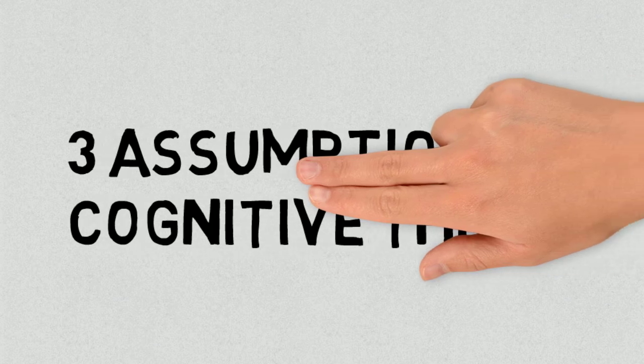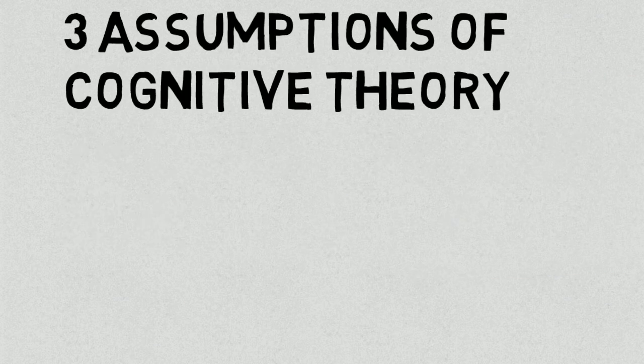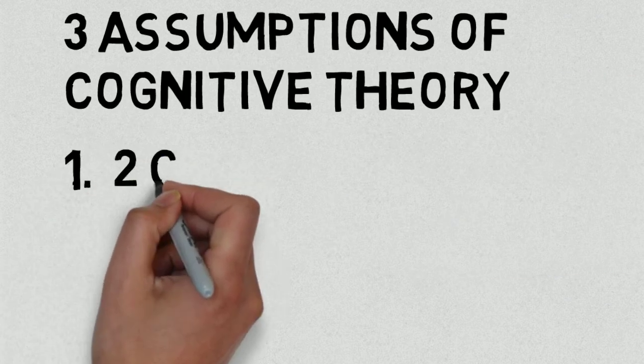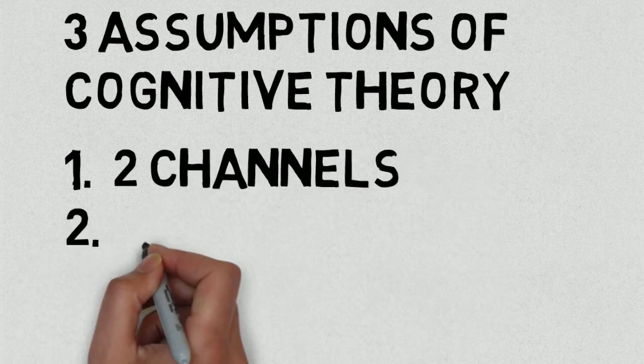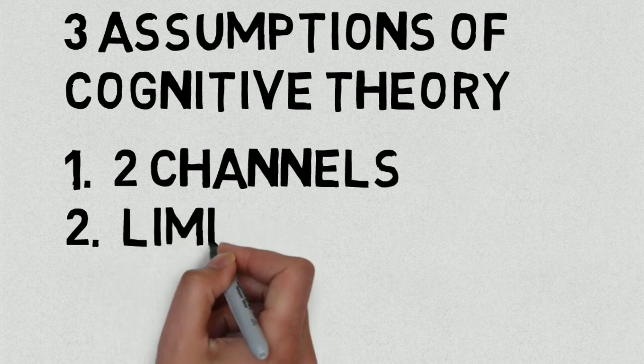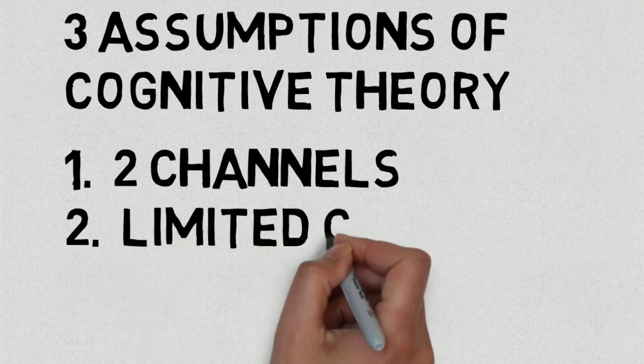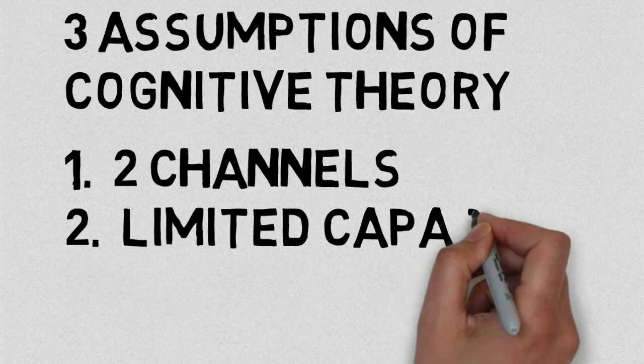Let's put it together. The cognitive theory of multimedia learning is based on three assumptions. That one, all people have two separate channels for processing verbal and pictorial material. Two, each channel has limited amount of processing capacity at one time.